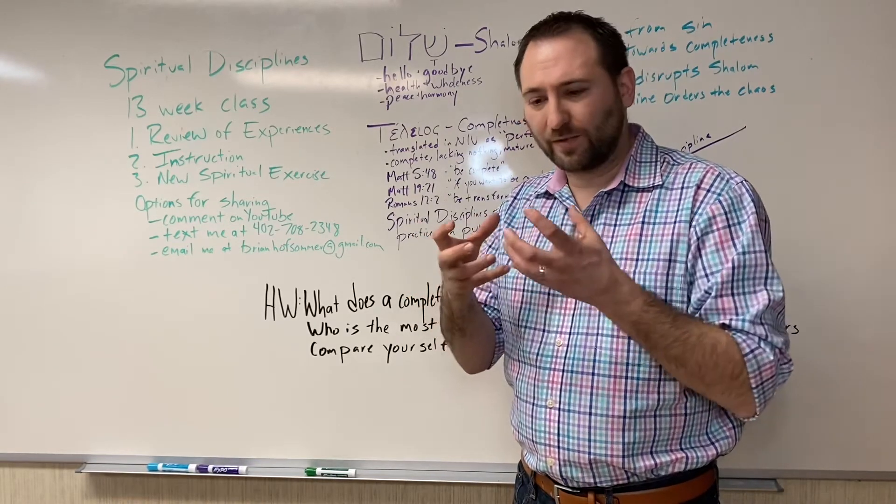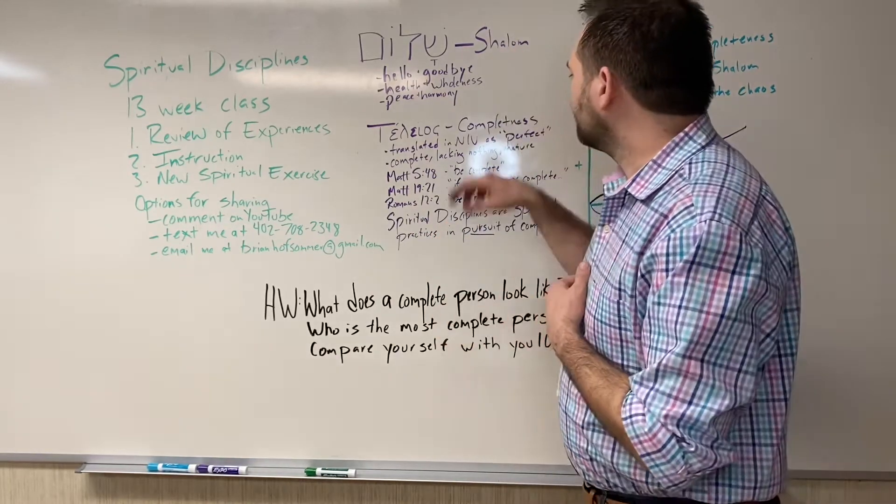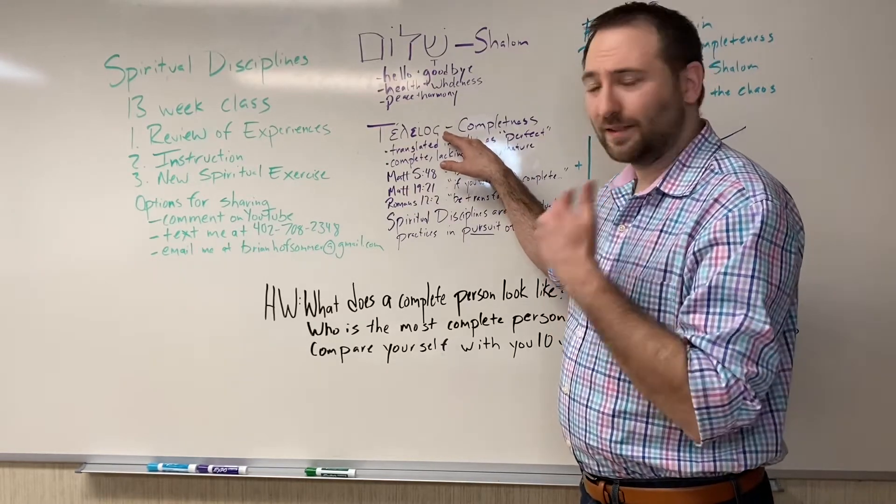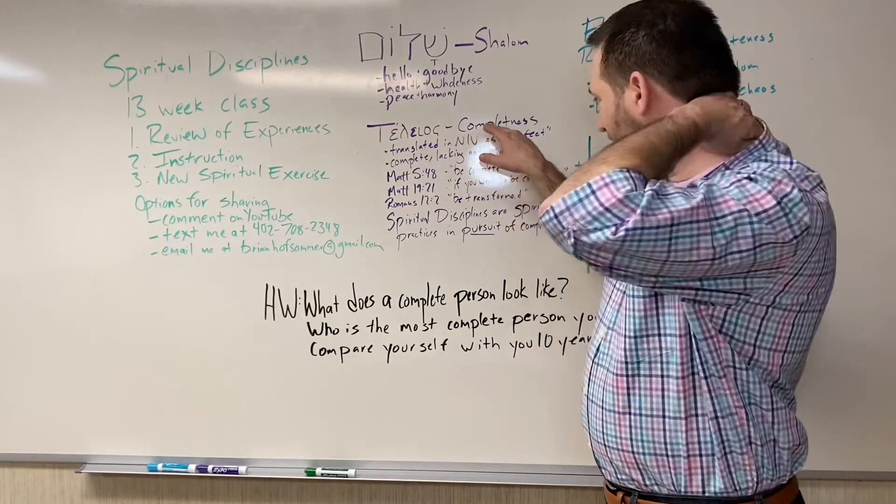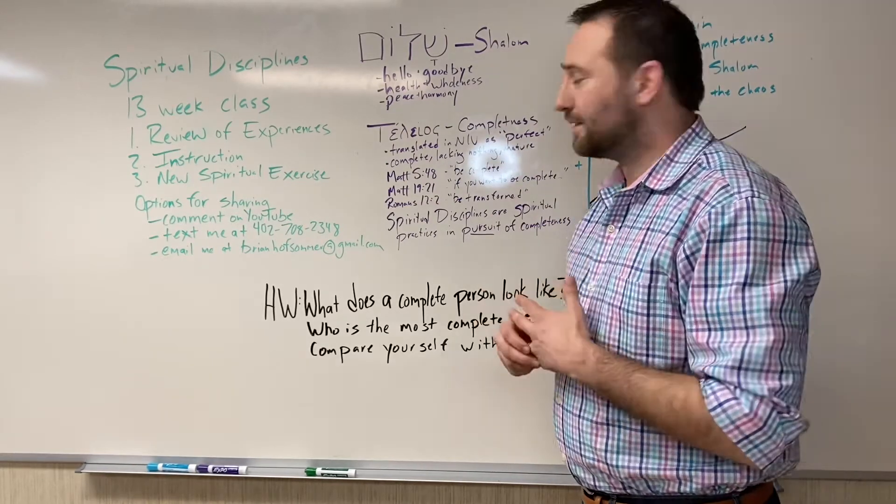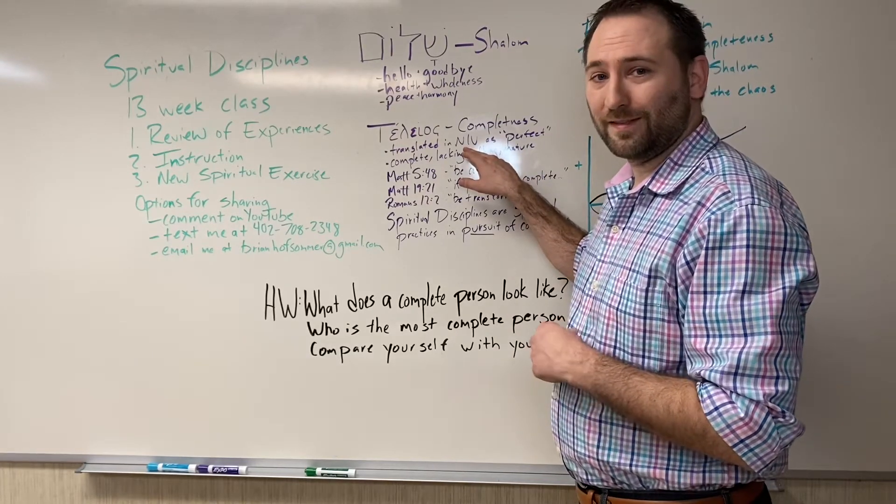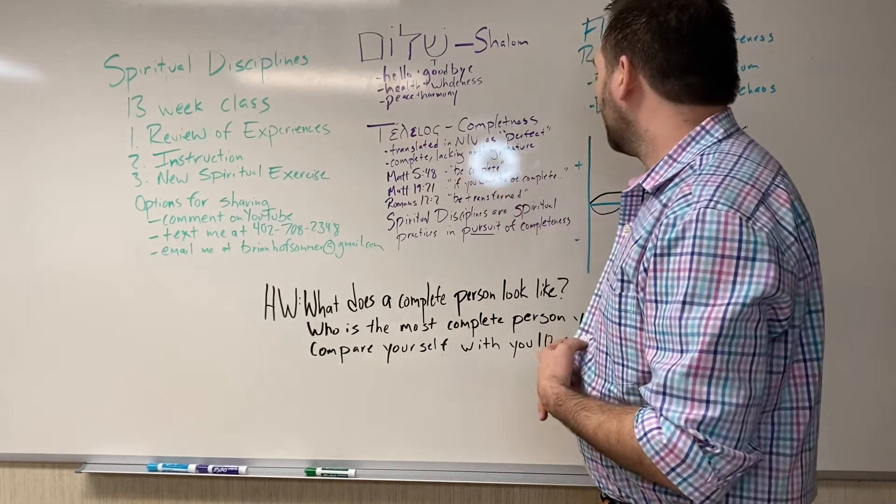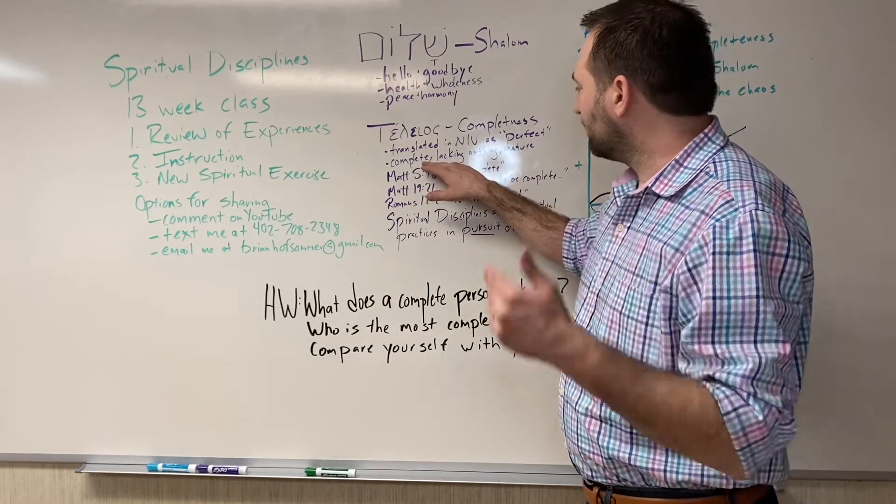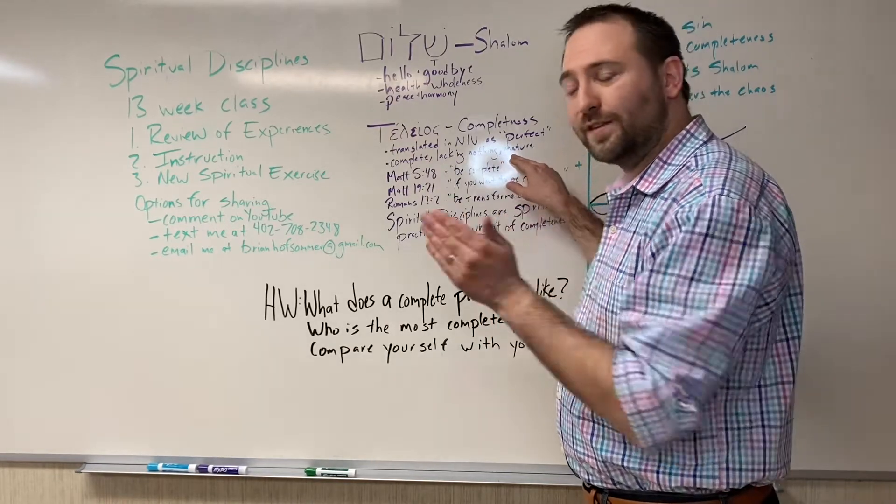In the New Testament we have another word, telios. This word means a variety of things. My favorite translation being completeness. In the NIV it's usually translated as perfect. Now that is not my favorite translation, and you'll see in a second. But it means something like complete, lacking nothing, mature, having reached its end.